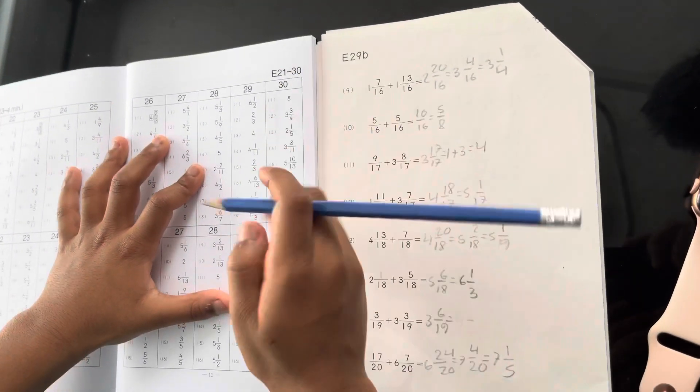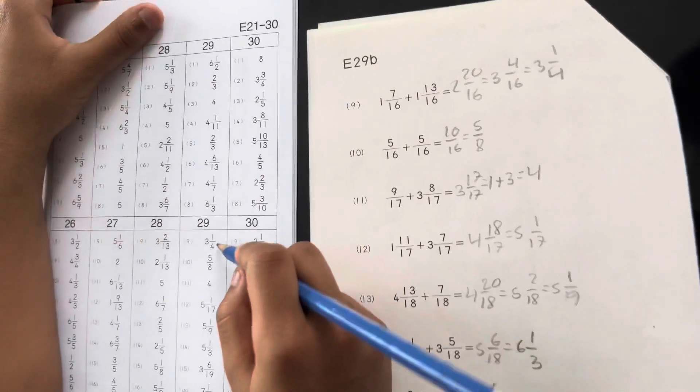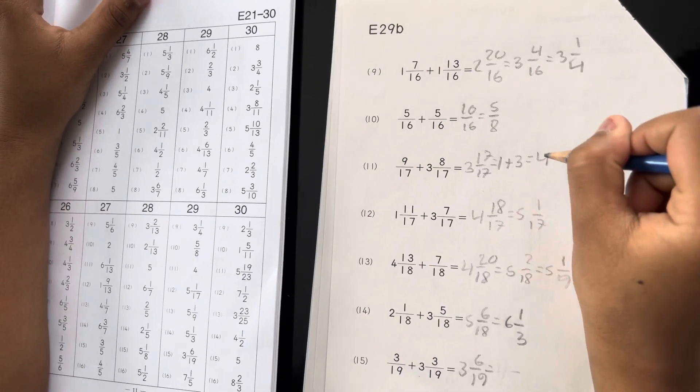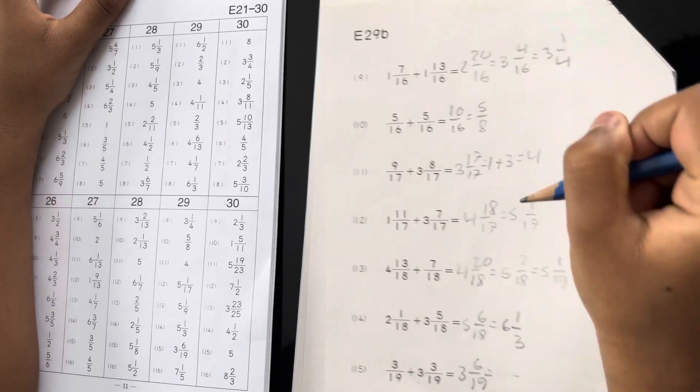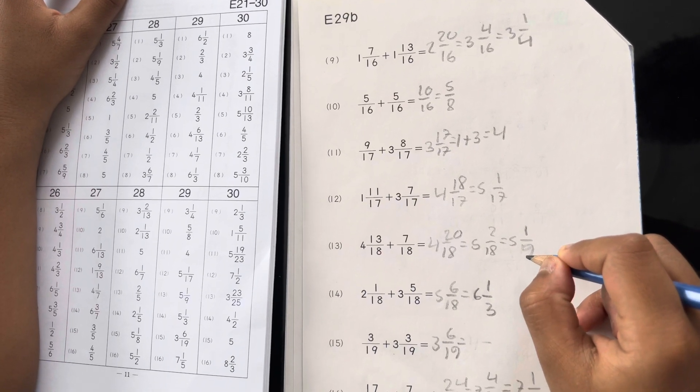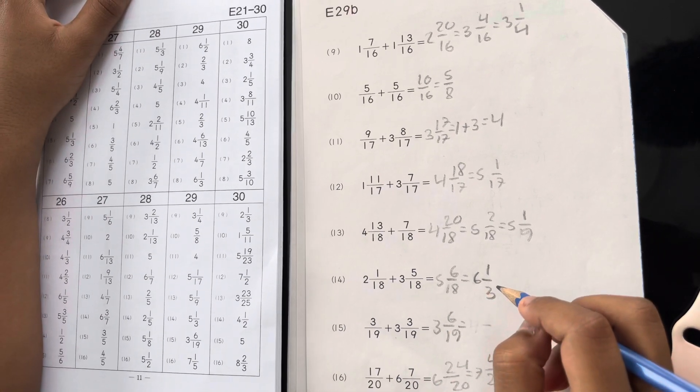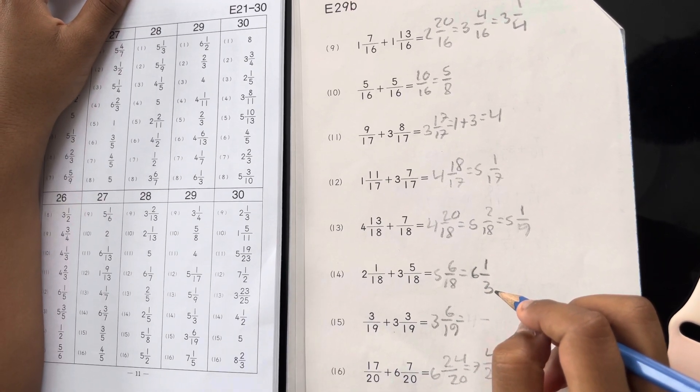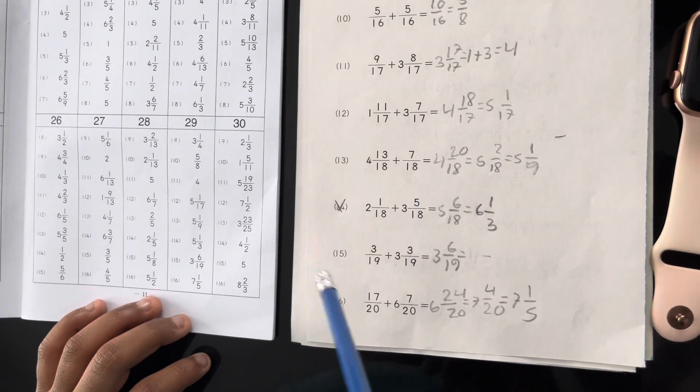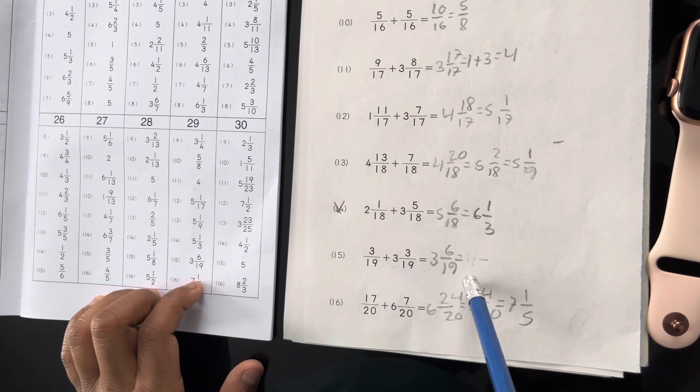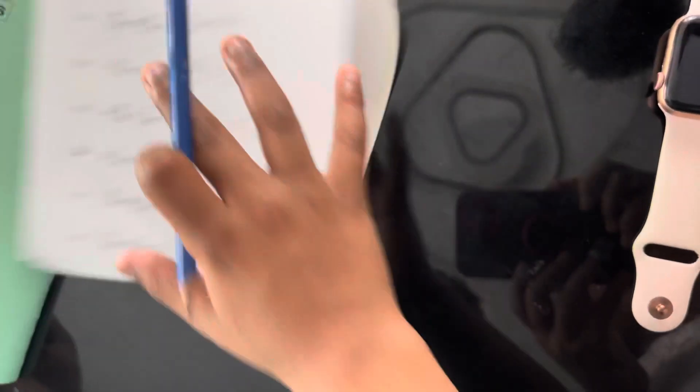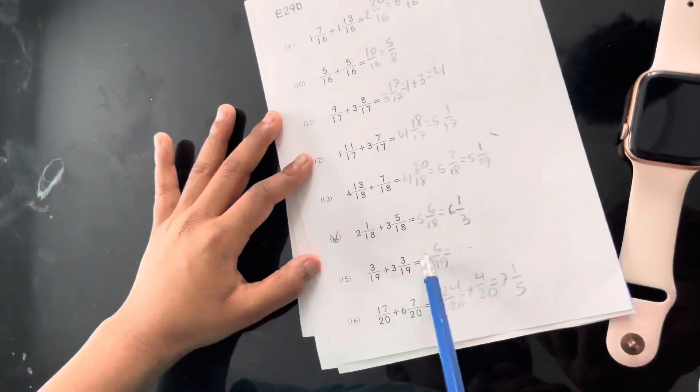E29 number B. 3 and 1 over 4, that's correct. 5 over 8, that's correct. 4, 5 and 1 over 17, 5 and 1 over 9, 6 and 1 over 3. Oh, I made a mistake. This mistake, 15, 3 and 1 over 19, 7 and 1 over 5. Okay, we have one mistake.